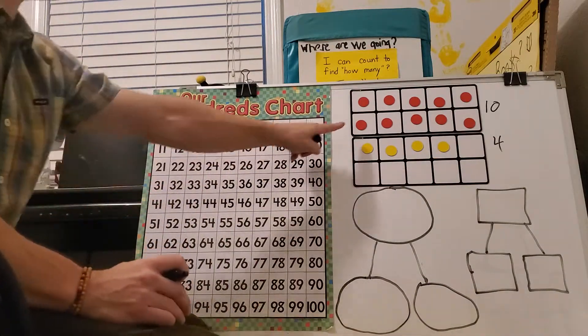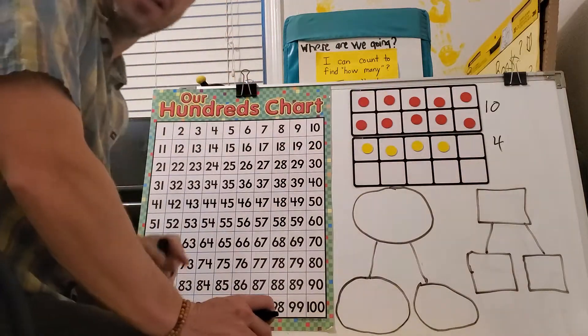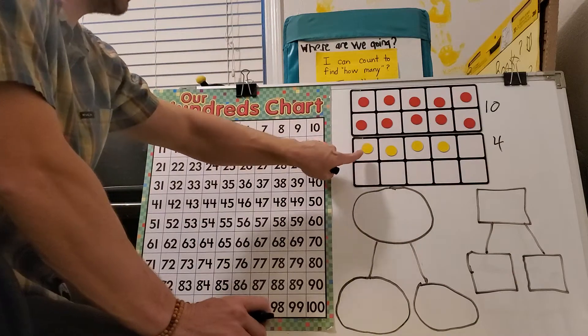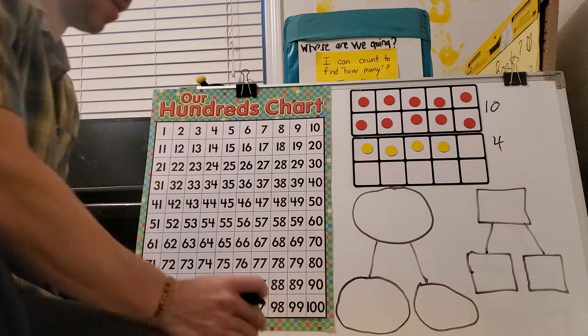Let's count out how many there are all together. I don't have to go back and count these because I know this is a full group of 10, so I'm going to count on: 10, 11, 12, 13, 14. You're right.